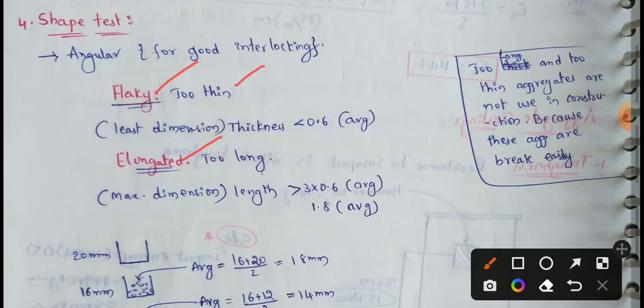Flaky means too thin; elongated means too long. If aggregates are too long or too thin, we risk problems because they will be easy to break.